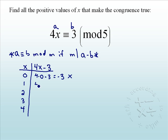Let's do the same thing for 1. 4 times 1 minus 3 is 1. 5 does not go into 1. So 1 is not an answer.